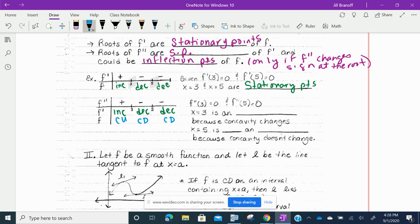So x equals 3 is an inflection point because the concavity changes. That's what makes you have an inflection point. But x equals 5 is not an inflection point because the concavity doesn't change. So you cannot make a blanket statement that the zeros of the second derivative are necessarily inflection points. It has to be a place where the concavity actually changes.